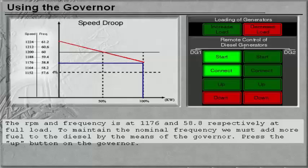To maintain the nominal frequency, we must add more fuel to the diesel by the means of the Governor. Press the up button on the Governor.